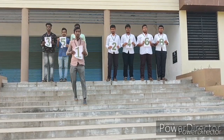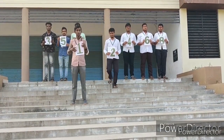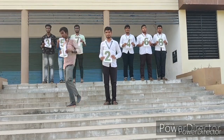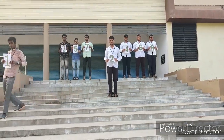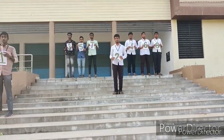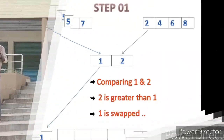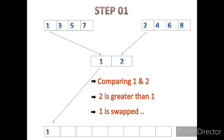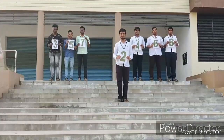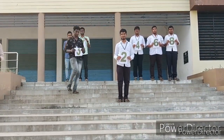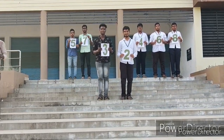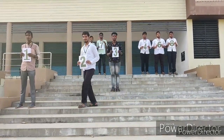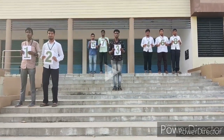One comes in the array index and two also does the same. They compare each other — one is lesser than two and this is swapped. That is step one. Two remains in the index; three moves to the array index and they compare each other — two is smaller, so it is swapped. That is step two.